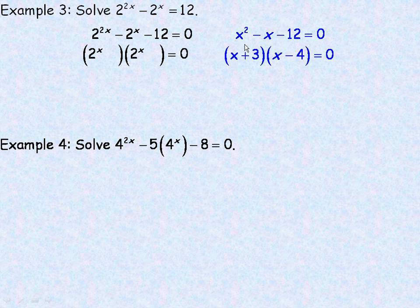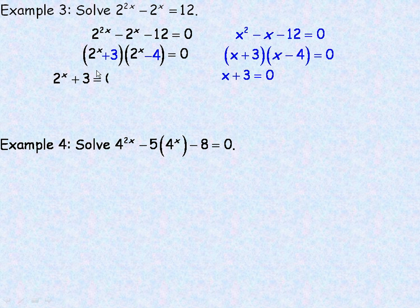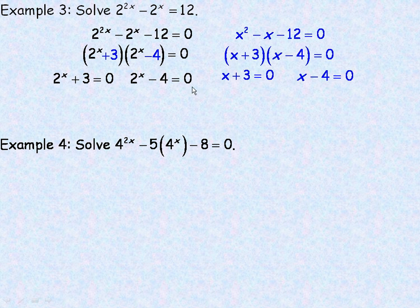The coefficient is negative 1 just like before, and the numbers multiply to negative 12, so it's still 3 and negative 4. We put a plus 3 and a minus 4. On the right side, just like with the quadratic, we set each factor equal to zero: 2 to the x plus 3 equals 0, and 2 to the x minus 4 equals 0.